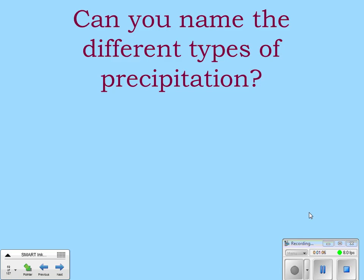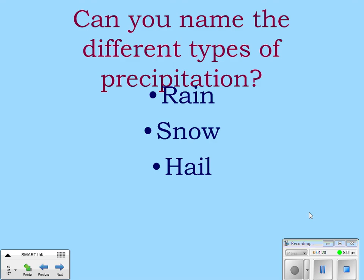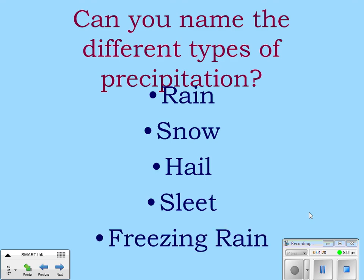There are five different types of precipitation: rain, snow, hail — which you generally get during thunderstorms — sleet, and freezing rain. A lot of people think that sleet and freezing rain are fairly similar, but we're actually going to find out how they're different.